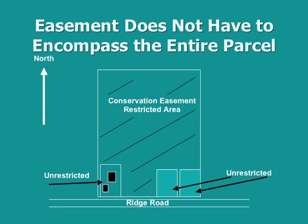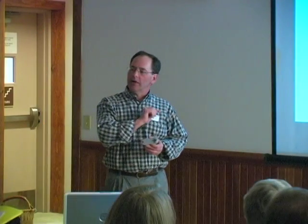There's another tool we can use in conservation easements called the reserved rights section. In that section, you might state: I, the landowner, want to reserve the right to create two additional house lots at some point in the future in Antrim, based on the zoning and subdivision laws of Antrim at that point in time, subject to the approval of the conservation organization holding the easement.